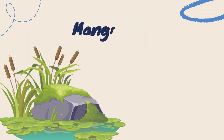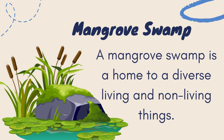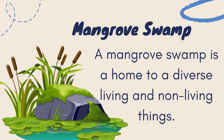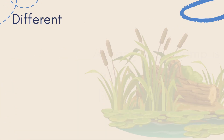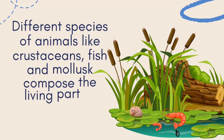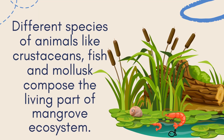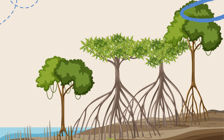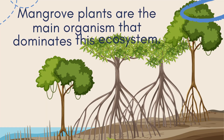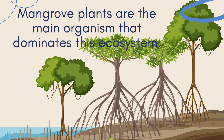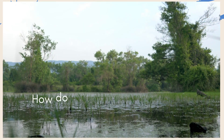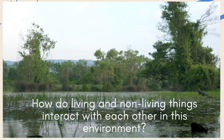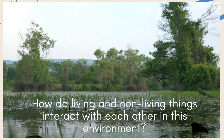A mangrove swamp is a home to diverse living and non-living things. Different species of animals like crustaceans, fish, and mollusks compose the living part of the mangrove ecosystem. Mangrove plants are the main organism that dominates this ecosystem. How do living and non-living things interact with each other in this environment?